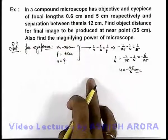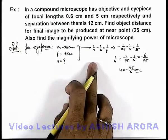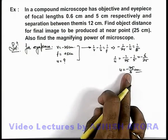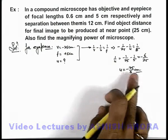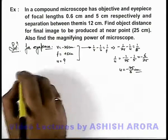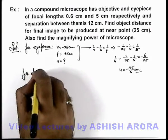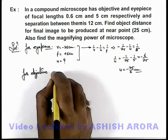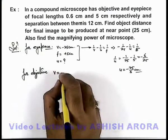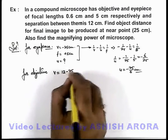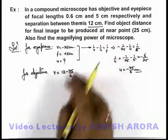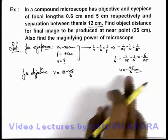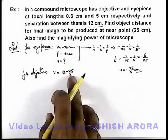In a compound microscope, the object for the eyepiece lens is the image produced by the objective lens. So this is the distance of the first image produced by the objective from the eyepiece lens. For the objective lens, the image is produced at a distance of 12 minus 25/6, because 12 is the tube length of the microscope and 25/6 is the distance of the first image from the eyepiece.